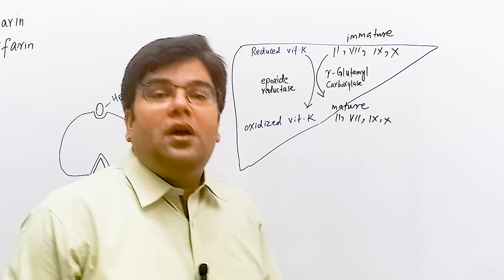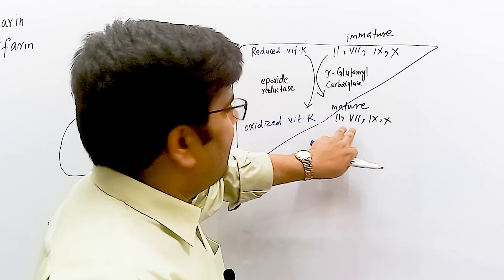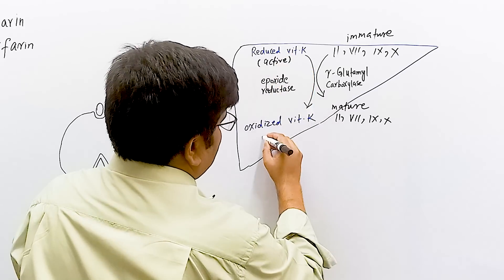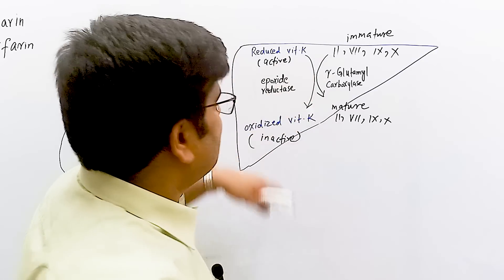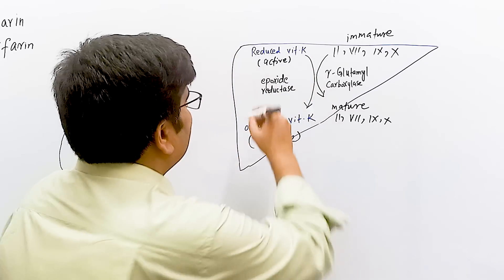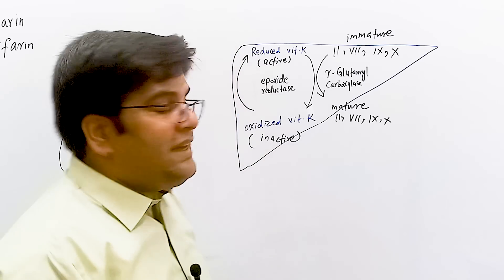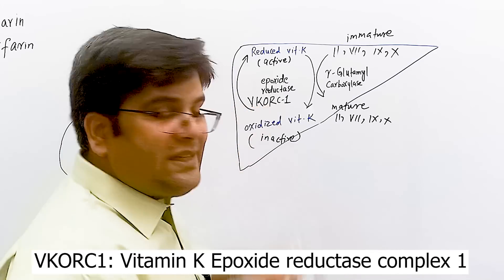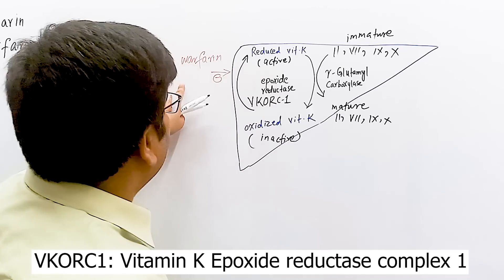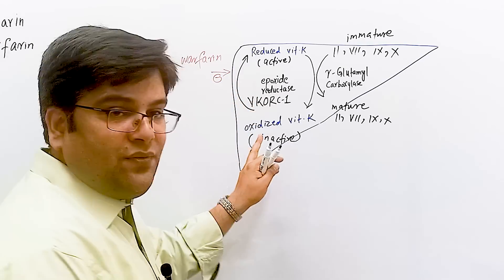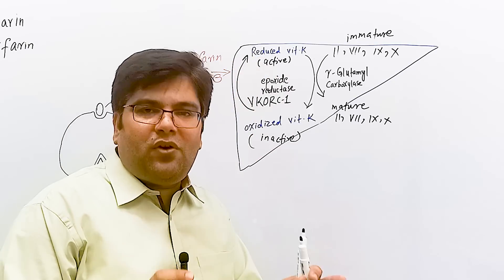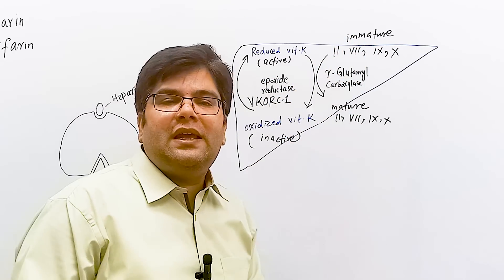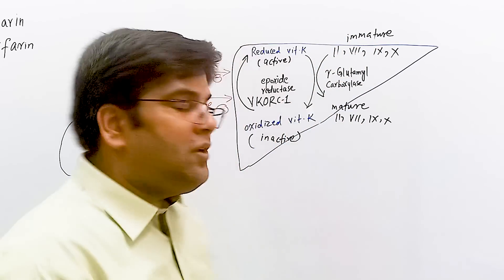Because calcium is important for coagulation, these mature clotting factors can perform their action. However, during this process the reduced (active) form of vitamin K becomes oxidized and inactive. To convert oxidized vitamin K back to its reduced form, the enzyme epoxide reductase (also called vitamin K-dependent epoxide reductase 1) is required. Warfarin inhibits epoxide reductase, so oxidized vitamin K cannot be converted back to its active reduced form, and immature clotting factors 2, 7, 9, and 10 are not activated.